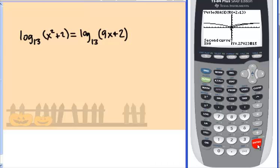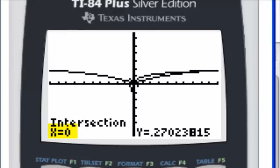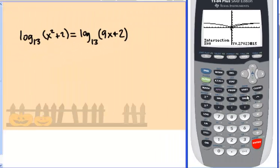And it automatically goes to the second curve, and it's also very close. Hit enter. And it'll ask you to guess. Hit enter one more time. And so the point of intersection is the x-coordinate. That's what we're concerned with because our equation says x squared plus 2 and 9x plus 2. Y is not important to us right now. The x value is. So one of the solutions is when x equals 0.